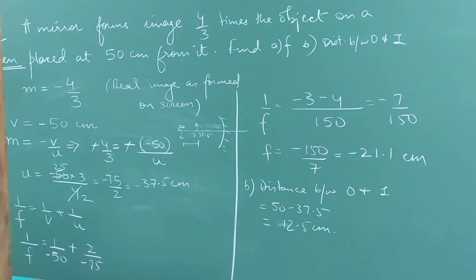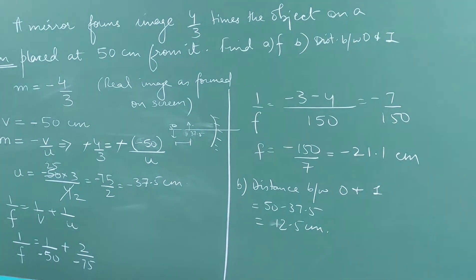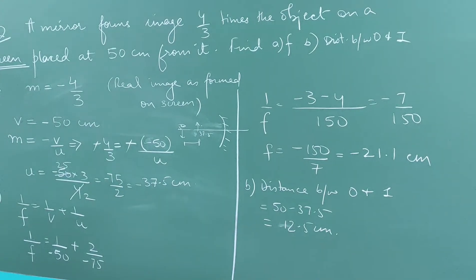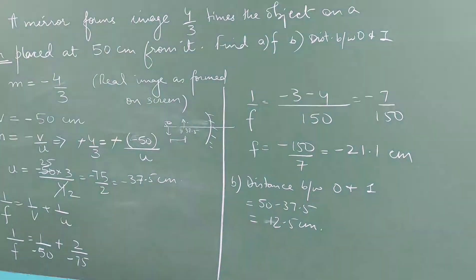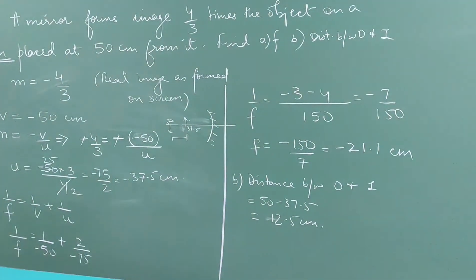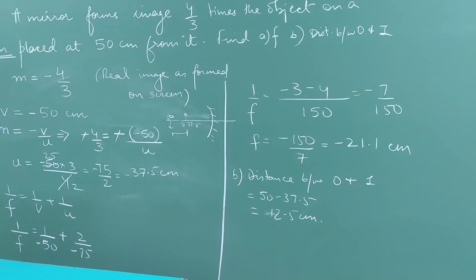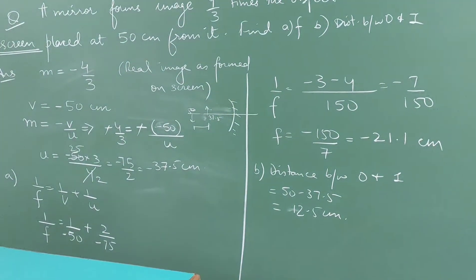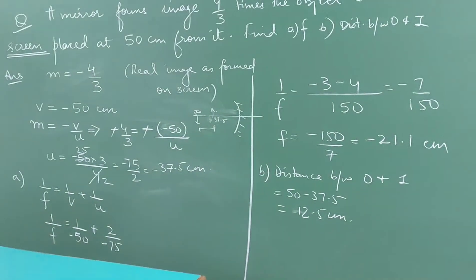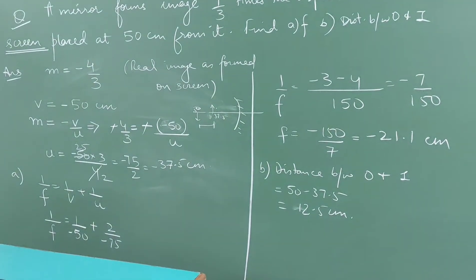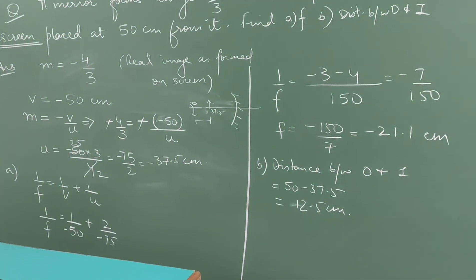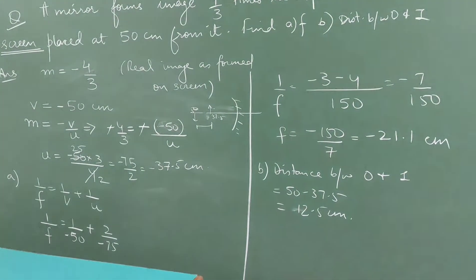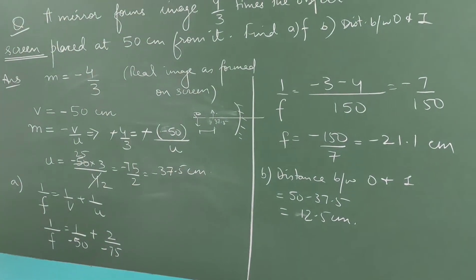A mirror forms an image 4/3 times the object, on a screen placed 50 centimeters from it. You have to find the focal length of the mirror and the distance between the object and the image.